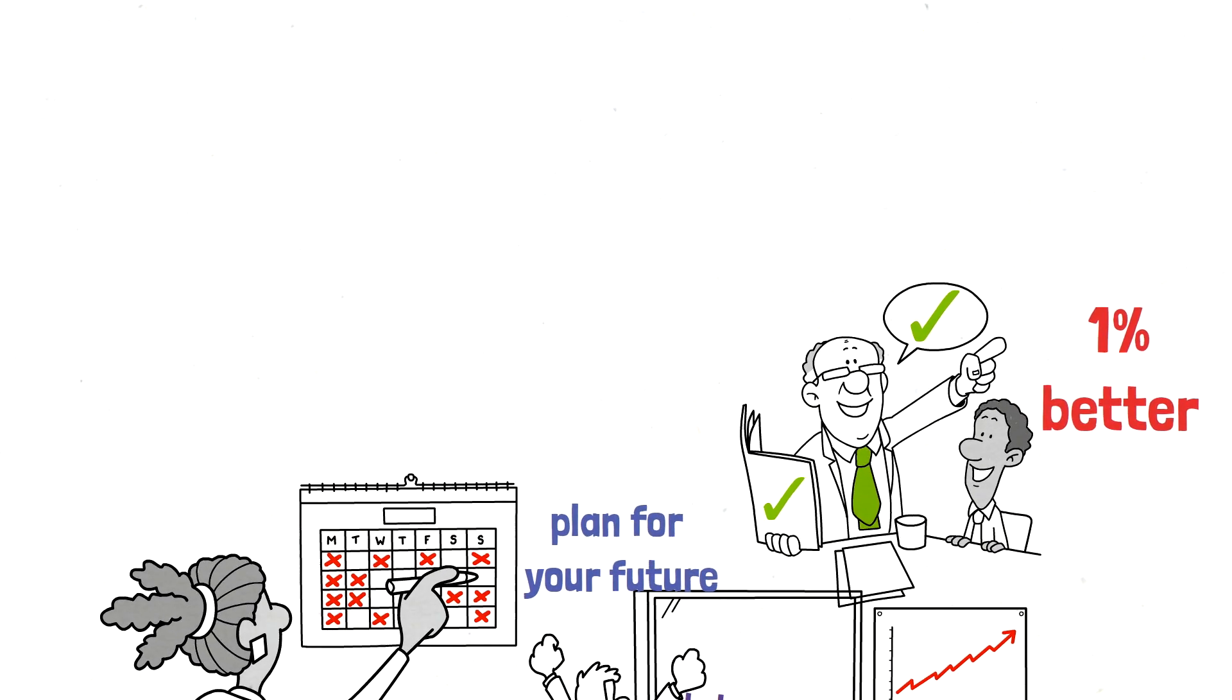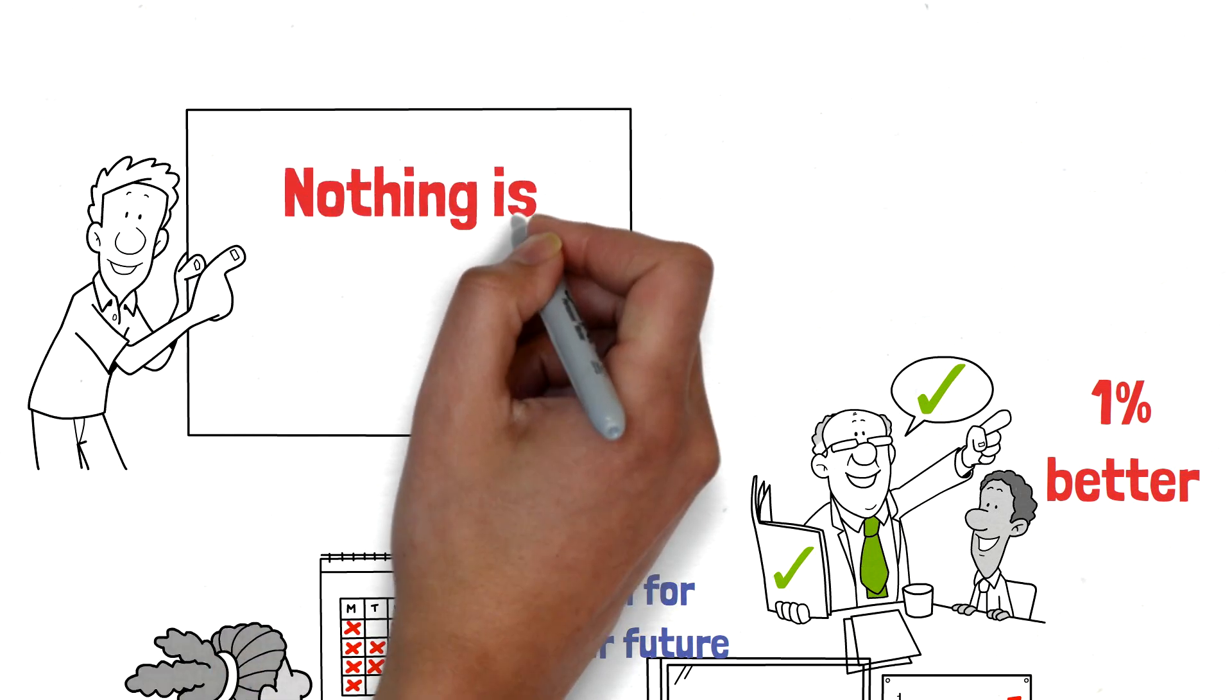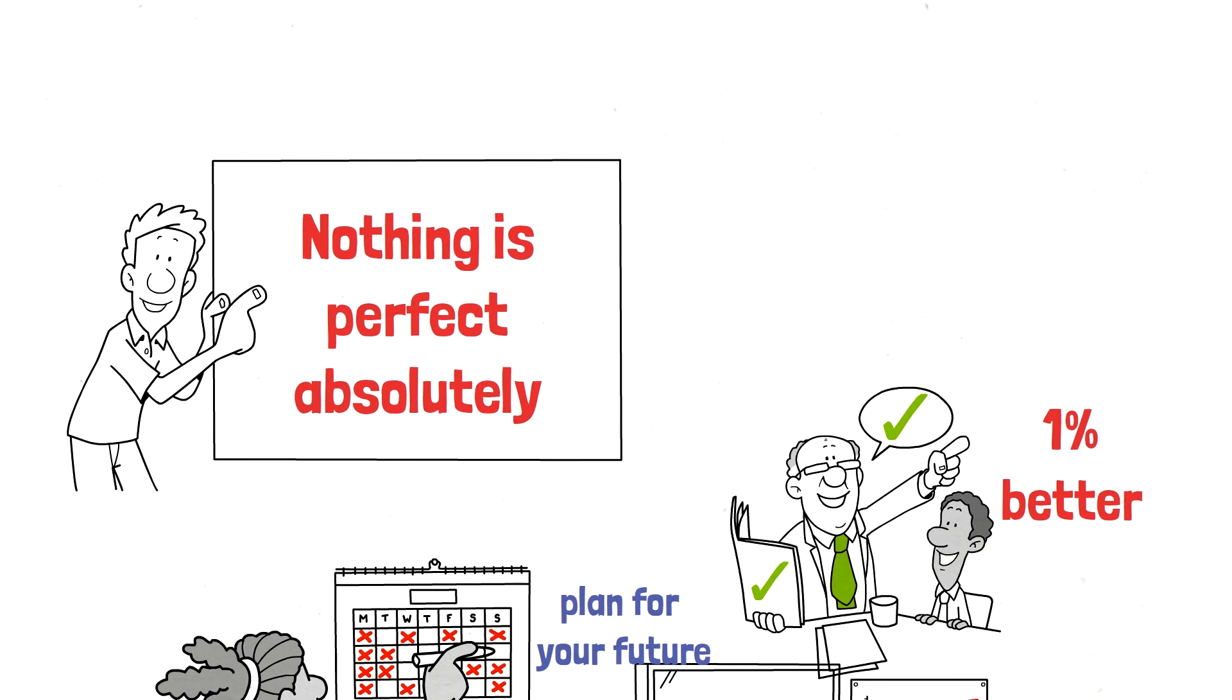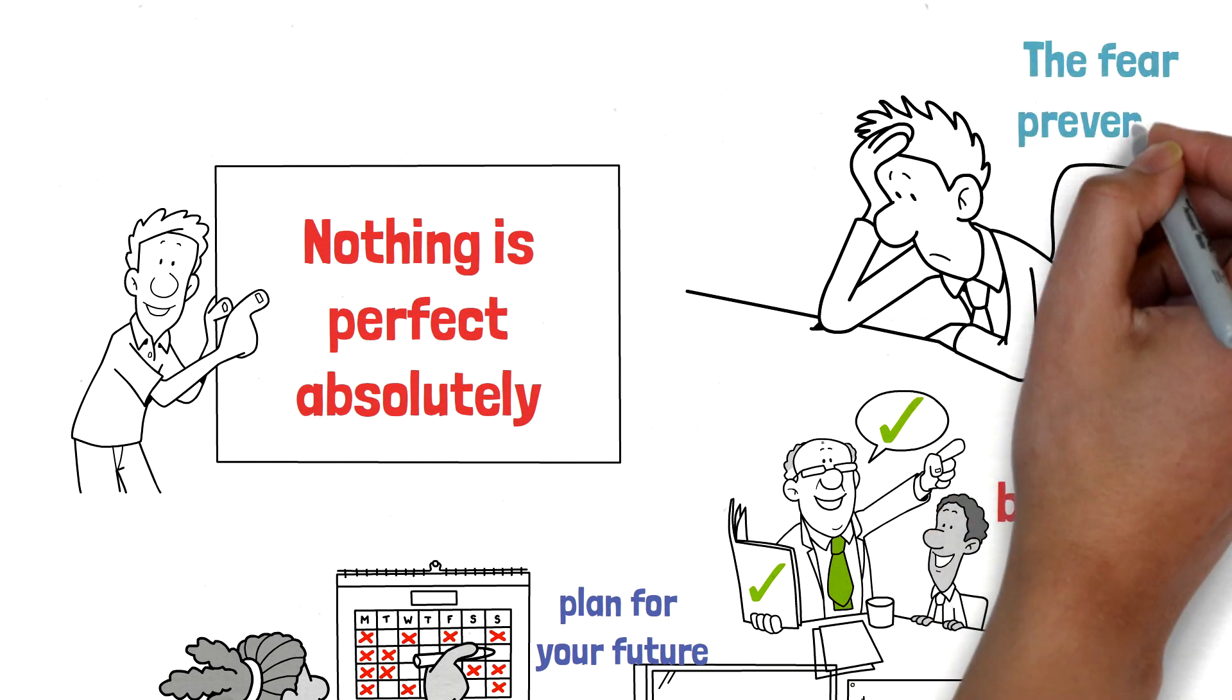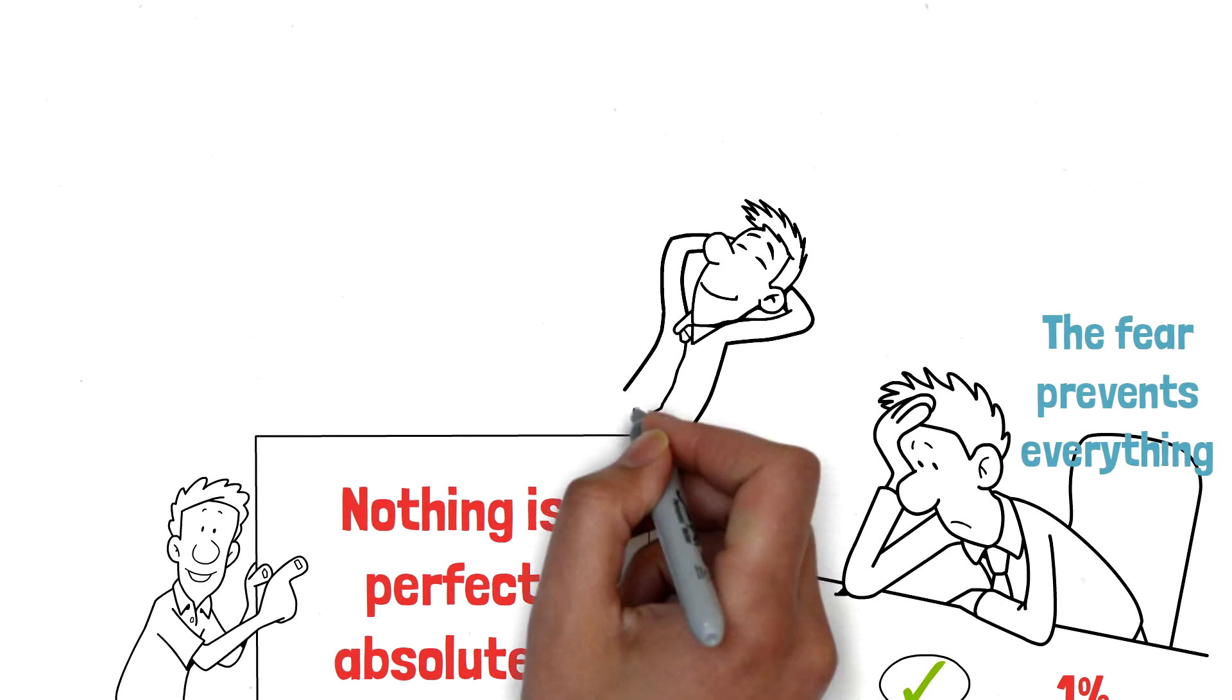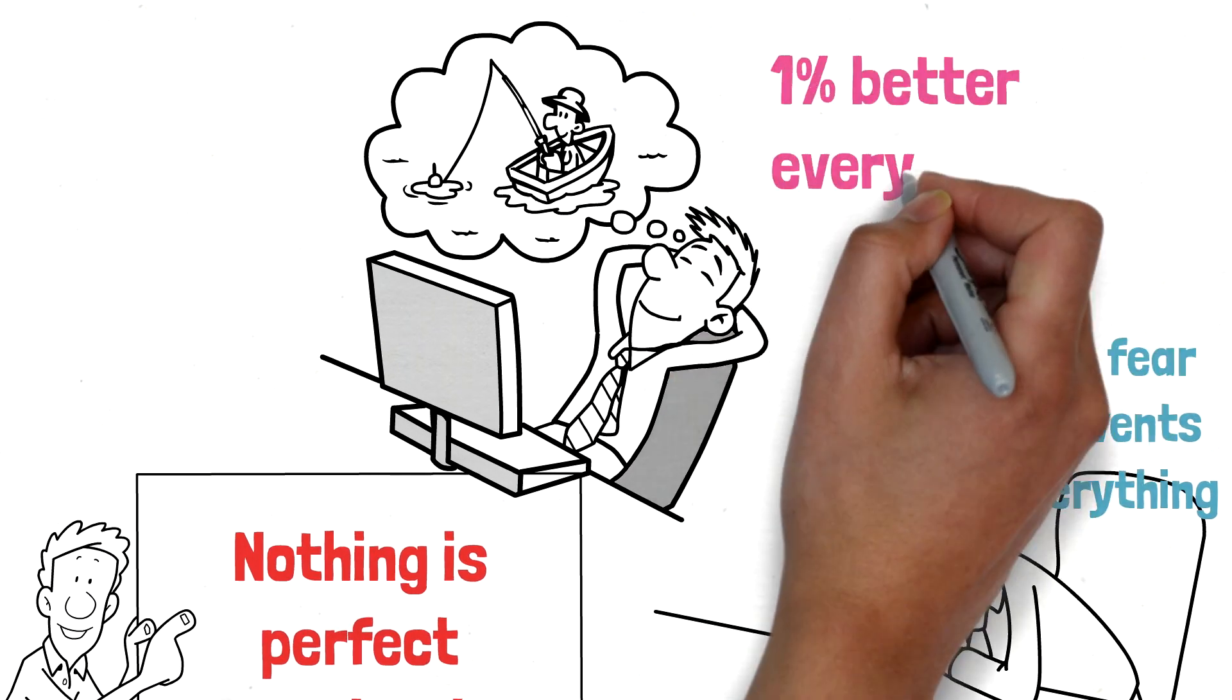Seventh thing: give up thinking everything has to be perfect. Better to have something imperfect than nothing at all. Nothing can be absolutely perfect, no matter how hard we try. Fear of failure, or even fear of success, often prevents us from taking action, keeping us from bringing anything creative to the world. A lot of opportunities will disappear if we keep waiting for perfect conditions. So you go ahead and then improve 1% every day.